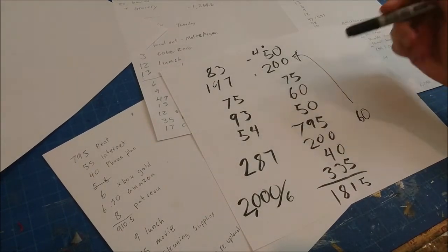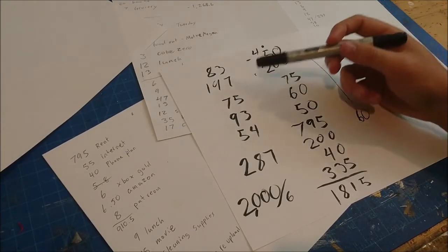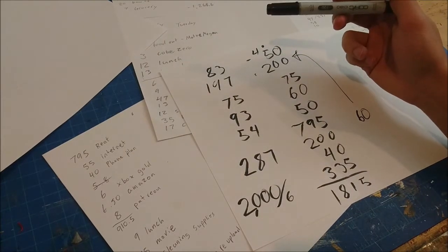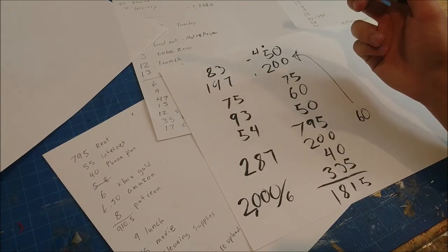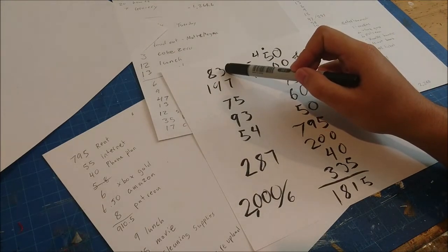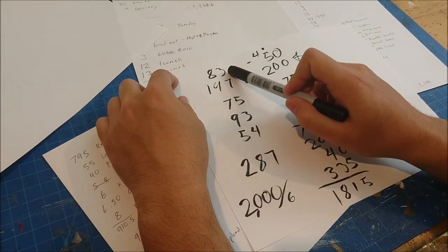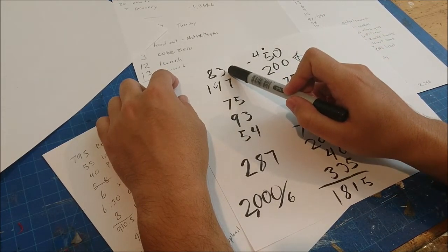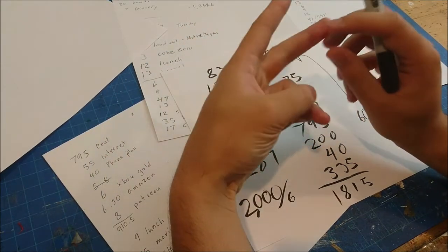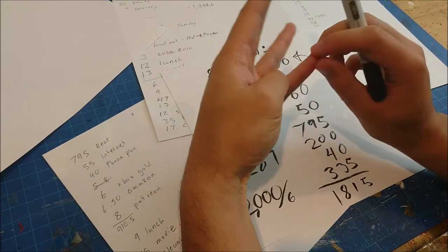Alright so I just did the rough addition of my spending and sort of an outline of the budget that I want to have. So I spent $83 on cleaning supplies and hygiene stuff which I feel like is a little bit high this month because I bought paper towel, razor blades, Comet, scrub pads...